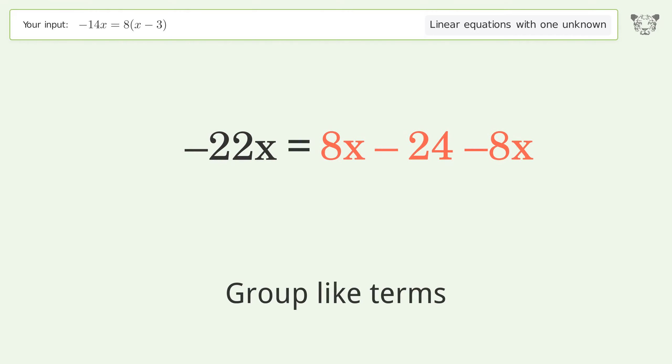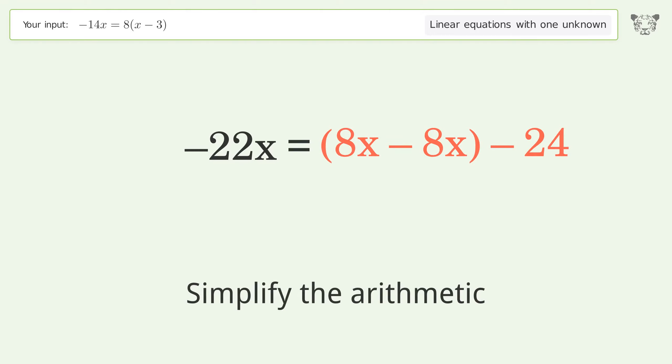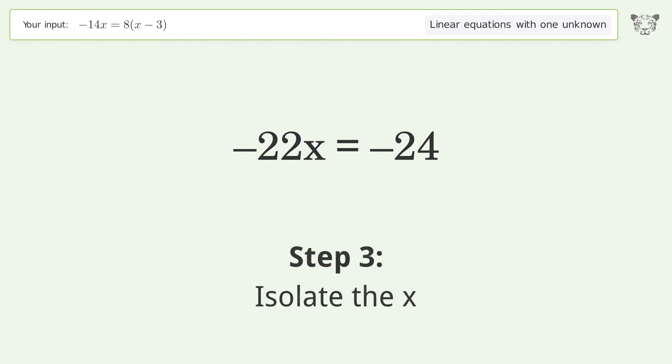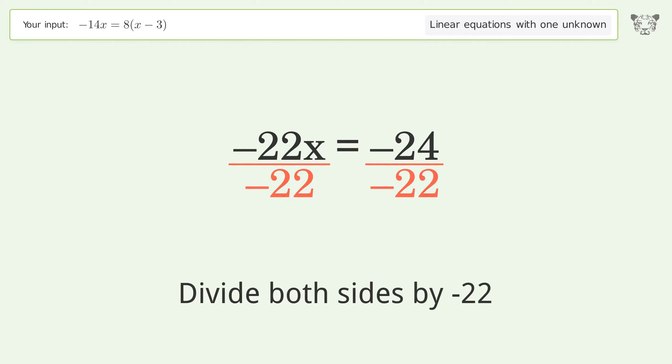Group like terms. Simplify the arithmetic. Isolate the x. Divide both sides by negative 22. Cancel out the negatives.